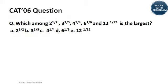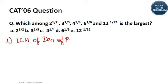The next question is a CAT 1996/2006 question: which among 2^(1/2), 3^(1/3), 4^(1/4), 6^(1/6), and 12^(1/12) is the largest? All the powers are different, so we try to make all powers equal. Step 1: find the LCM of the denominators of the powers: 2, 3, 4, 6, 12. The LCM is 12, so we will try making every power equal to 1/12.